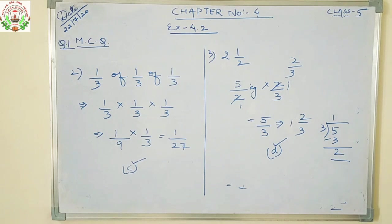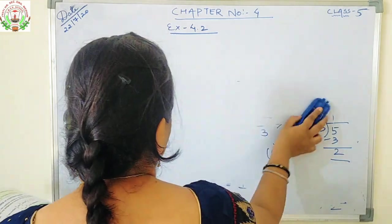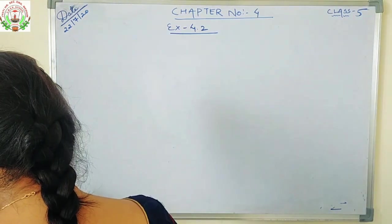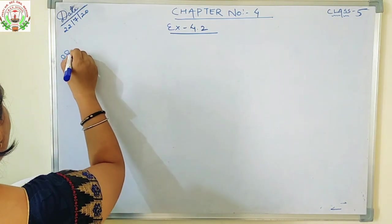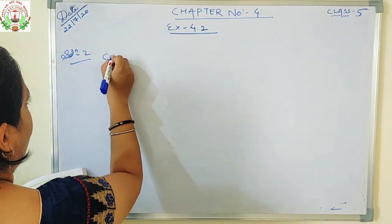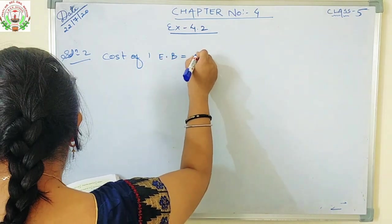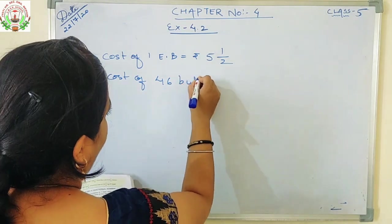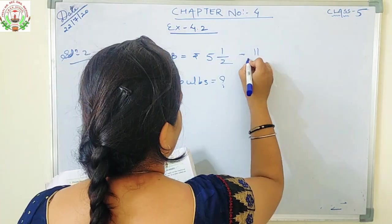Now question number 4 — a word problem. The cost of an electric bulb is Rs. 5 and 1 upon 2. Find the cost of 46 such bulbs. We will write the solution: cost of 1 electric bulb equals Rs. 5 and 1 by 2. Convert the mixed fraction: 5 twos are 10, 10 plus 1 is 11 by 2.